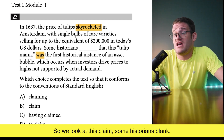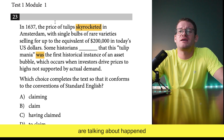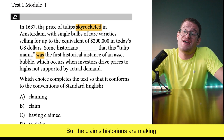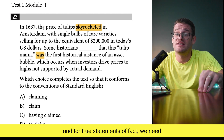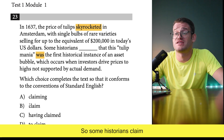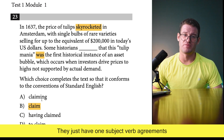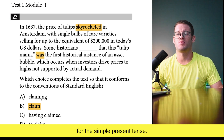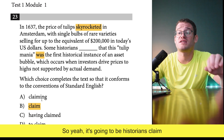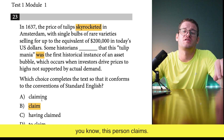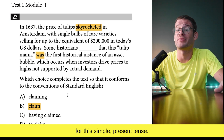We look at 'some historians blank.' Yes, the thing the historians are talking about happened in the past — in 1637 — but the claims the historians are making is something that's true in the present. For true statements of fact we need simple present tense: 'some historians claim.' Historians is plural, so it's 'historians claim.' If it were one historian it would be 'claims,' but we don't even have that option here.